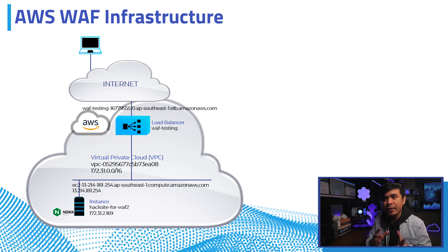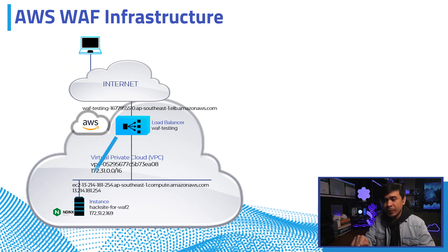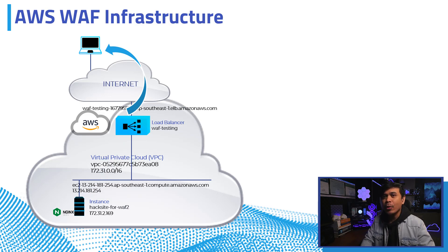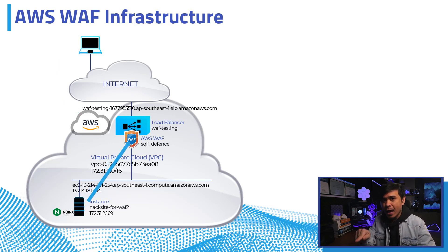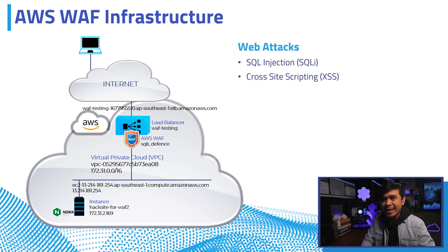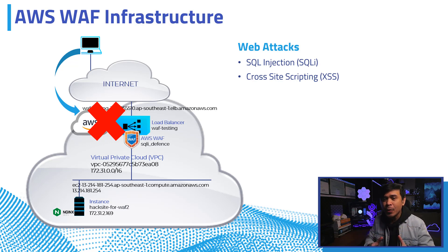As the client sends HTTP requests, the load balancer processes it and forwards the request down to the server at 172.31.2.169. We then enable the Web Application Firewall on our AWS load balancer and add rules. When a client sends clean, legitimate traffic, the load balancer processes and forwards it to the server — all good. When a client sends malicious traffic, look at the result: web attacks such as SQL injection and cross-site scripting will be blocked.